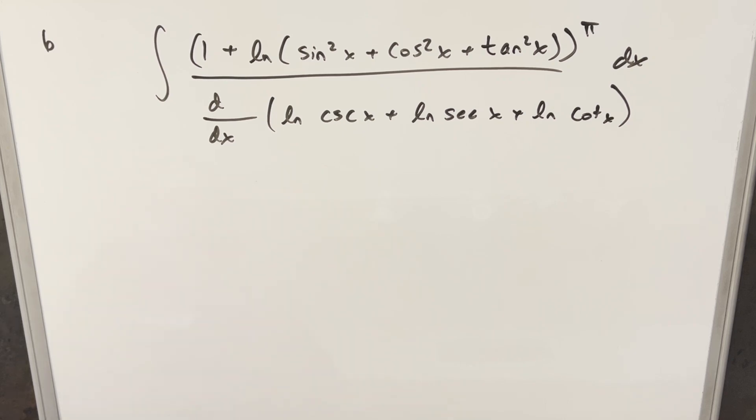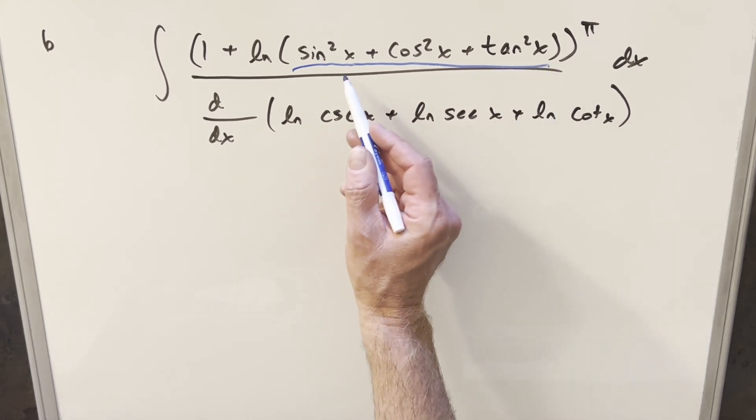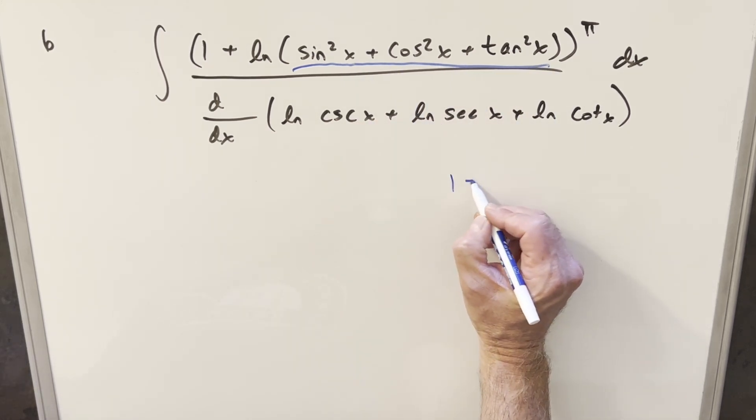Now to get started with this, despite we have a lot going on, there's a lot of places where we can get simplification too. Like I think this is the most obvious place right here. Sine squared x plus cosine squared x, that's going to be the same thing as 1.